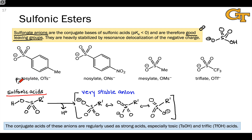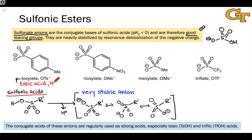The conjugate acid of tosylate is called tosic acid. It's just para-tosylate with a proton linked to the O⁻, and that's abbreviated as HOTs.